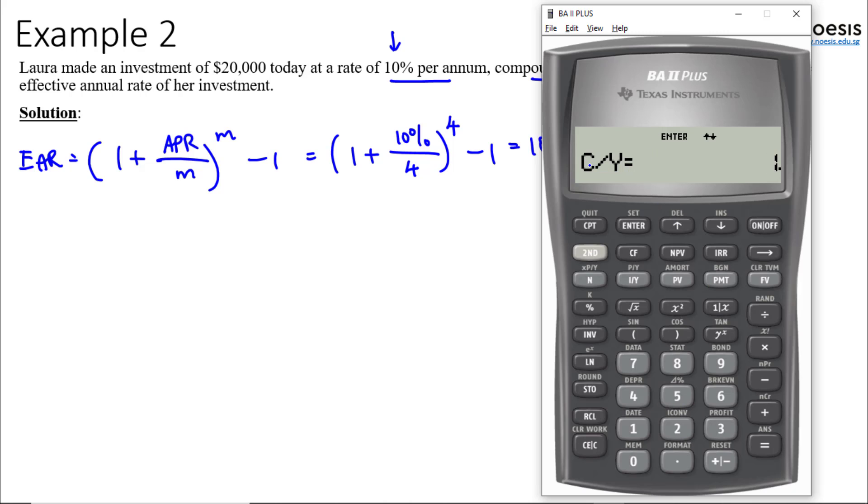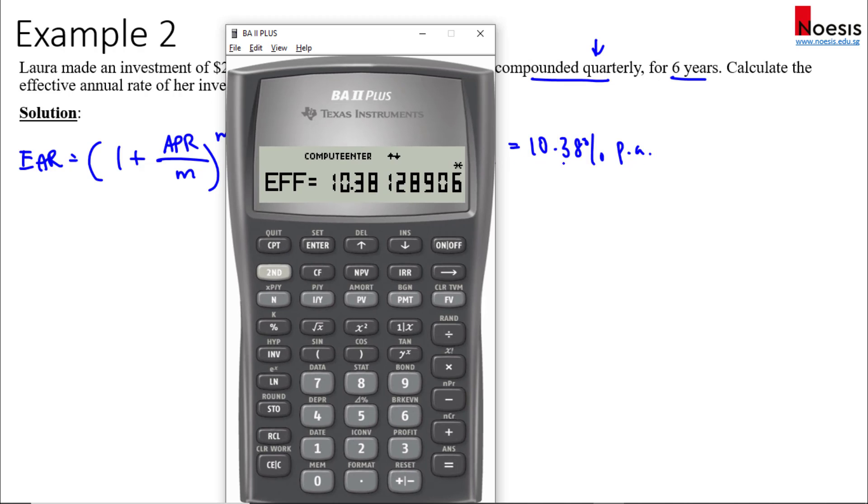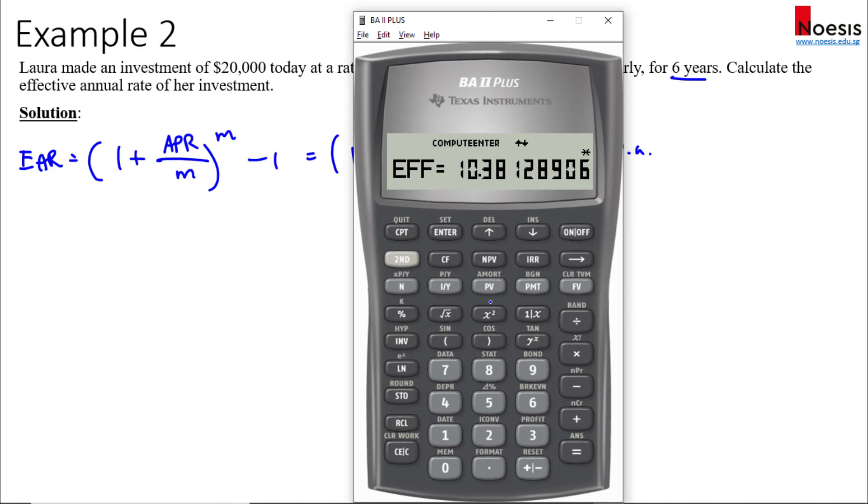Then you have NOM, you have C/Y which is compounding frequency per year, and then if I go up there's effective rate or the EAR. Now the NOM here will be the stated rate which is 10%, let's key in 10 here. Then we'll go up, the compounding frequency is quarterly so that's 4. Then scroll up, your effective rate here you'll press compute CPT and then you'll get 10.38. So that's an easy way of getting the effective annual rate.